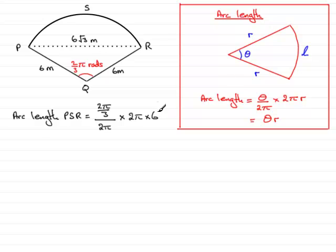So you can see the 2π cancels out, and you've basically got θ times the radius. Alright, but you can only use this version if you're working in radians.